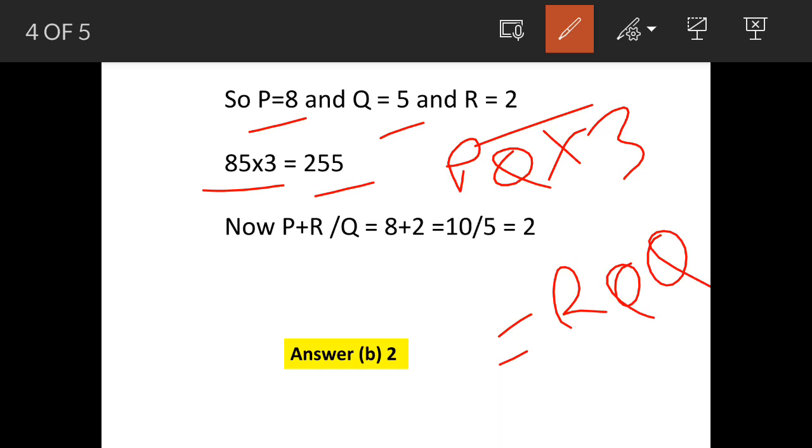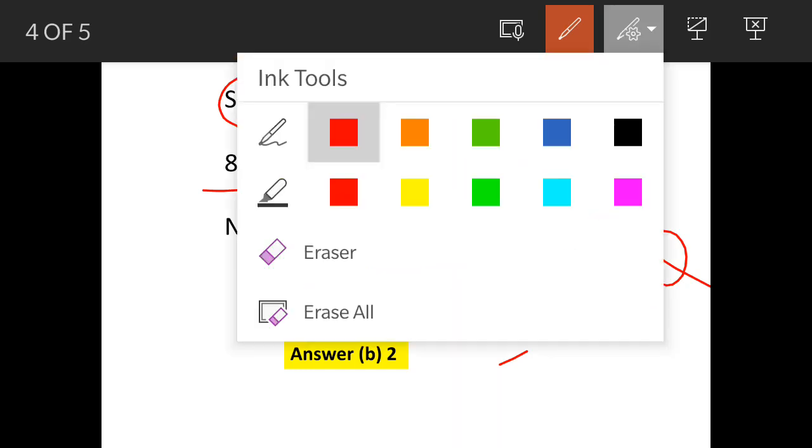So now the requirement is (P+R)/Q. So value of P is 8, value of R is 2. So 8+2 divided by 5, that is the value of Q. So we get 2 here.